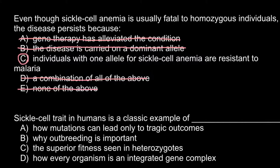Next question: sickle cell trait in humans is a classic example of — answer A, how mutations can lead only to tragic outcomes; B, why outbreeding is important; C, the superior fitness seen in the heterozygote; D, how every organism is an integrated gene complex.